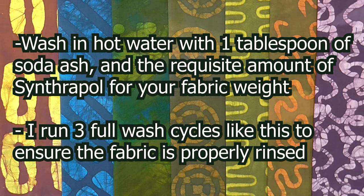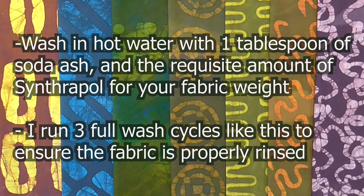Once you have wrung out as much wax as you can from the fabric, you need to wash your fabric in the washing machine. I use an all-hot water cycle to do this. In the water, I put about a tablespoon of soda ash and enough synthrapol detergent based on the weight of the fabric. The synthrapol helps to remove any unbonded dye particles from the fabric. I typically wash three full cycles like this to make sure the fabric is properly rinsed. But rinse as much as you want or need to.